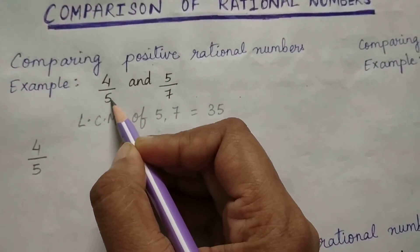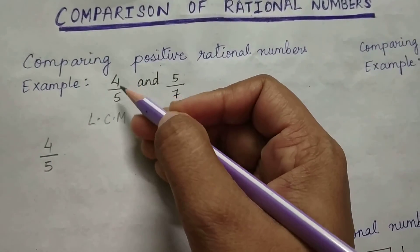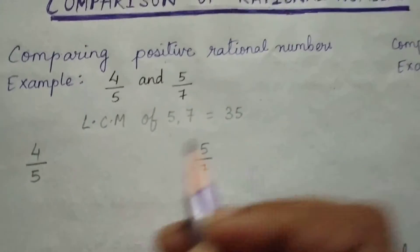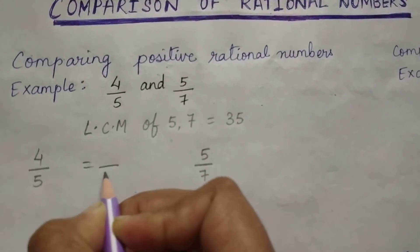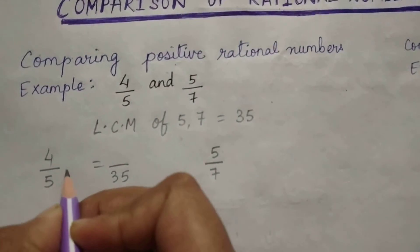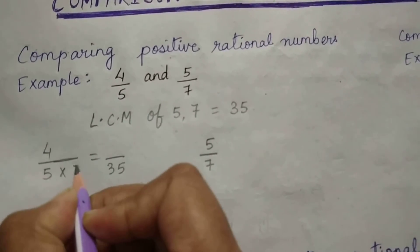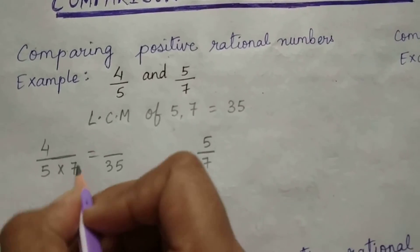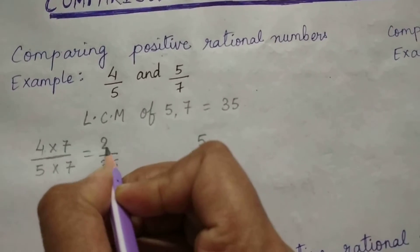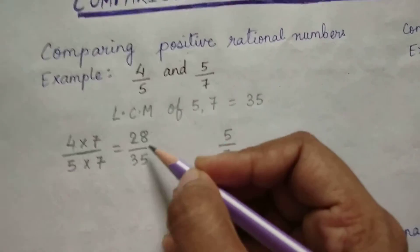First, find the LCM of 5 and 7, which is 35. Convert 4 by 5 to an equivalent rational number where the denominator is 35. Since 5 into 7 is 35, multiply 7 with the numerator as well. 4 into 7 is 28, so the equivalent rational number of 4 by 5 is 28 by 35.